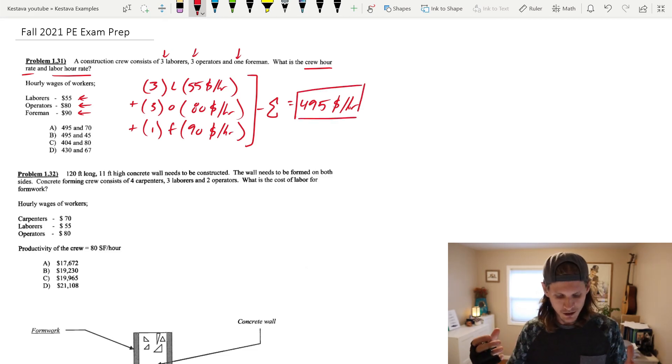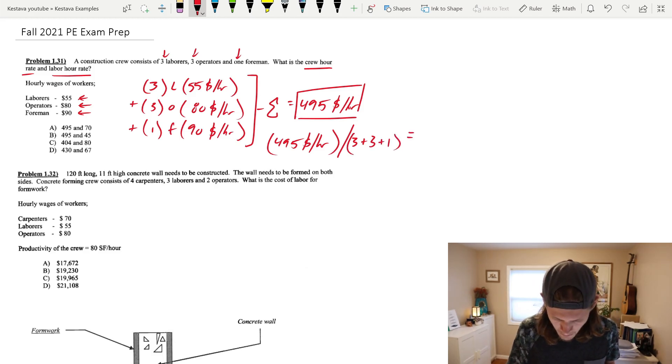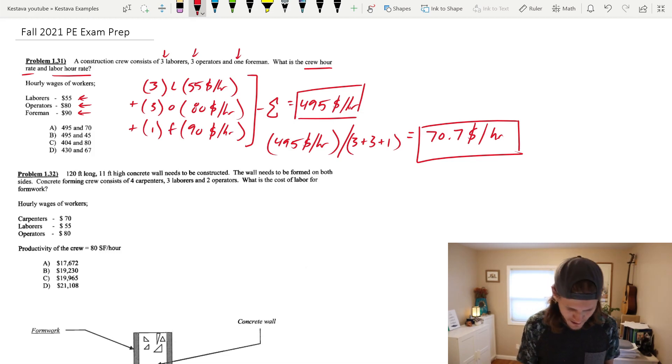But now they're asking the other question of what is the labor hour rate. And the labor hour rate is actually just your crew hour rate divided by the number of people in the crew, no matter what their specialty is. So for that, it's going to be $495 divided by three laborers plus three operators plus one foreman, which is a seven person crew total, which gets us $70.70 per hour. That's all it is. And if we go over here, green, we always go for right answers. So $495 and $70.70 right there. That's going to be my final answer.